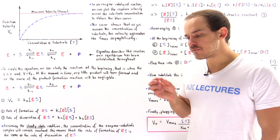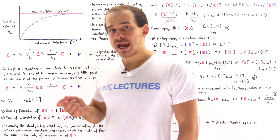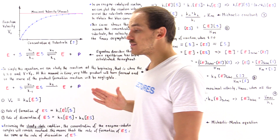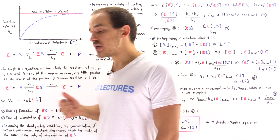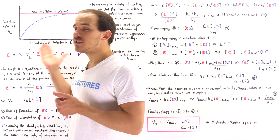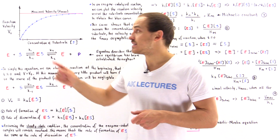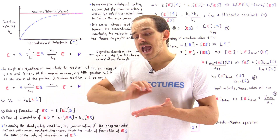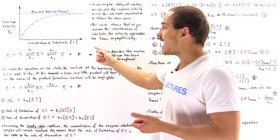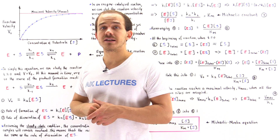Inside our body we have all these different types of processes which are catalyzed by enzymes. In order to study the behavior of enzymes and how they catalyze reactions, we have to study the rates of these enzymes. In enzyme kinetics we study the rates of reactions by plotting a curve where the y-axis is the reaction velocity V-naught and the x-axis is the concentration of the substrate S that binds onto the active site of the enzyme.